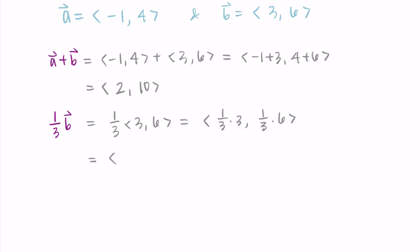One-third times three is just one, and one-third times six is two. So my solution is the vector one, two.